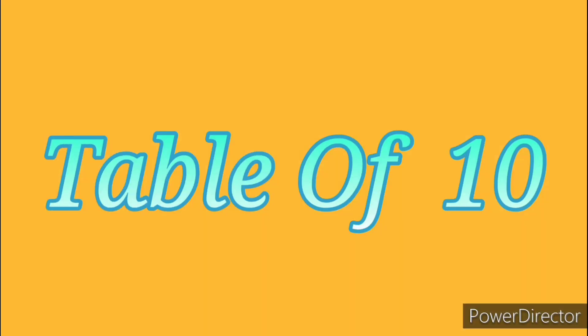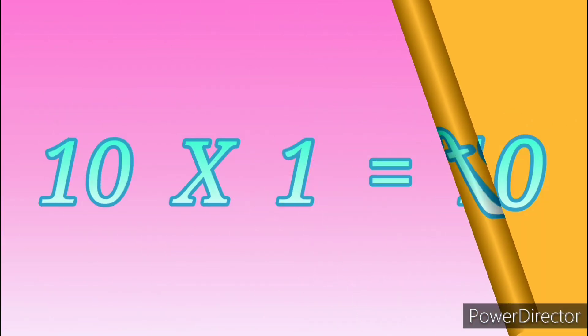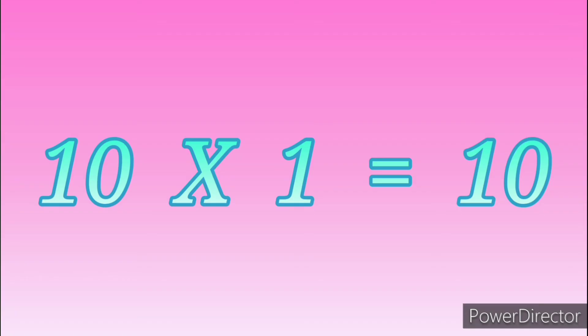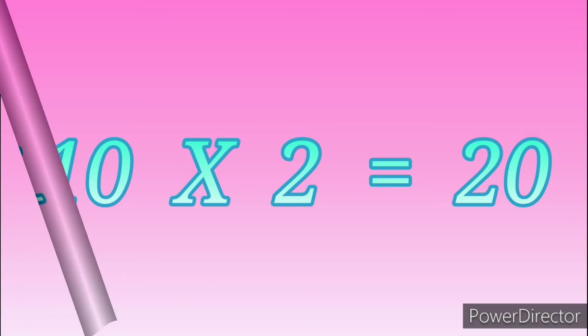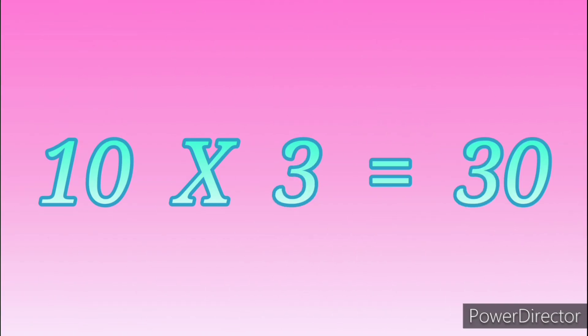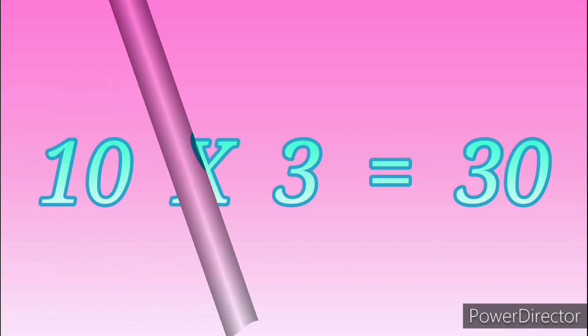Table of Ten. 10 ones are 10. 10 twos are 20. 10 threes are 30.